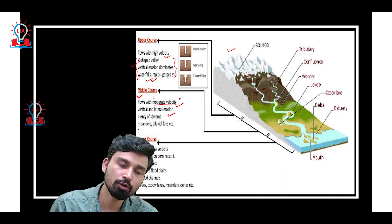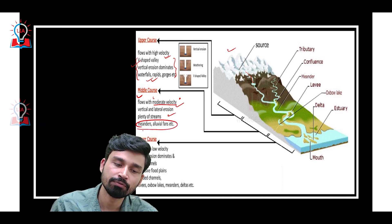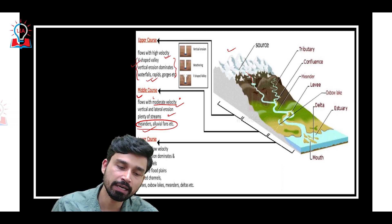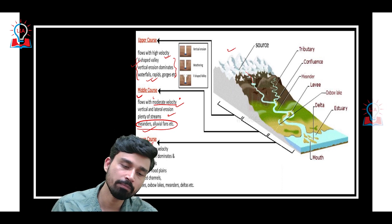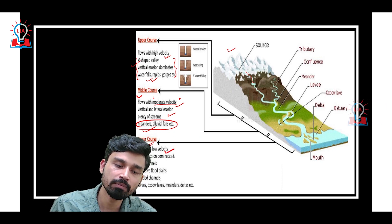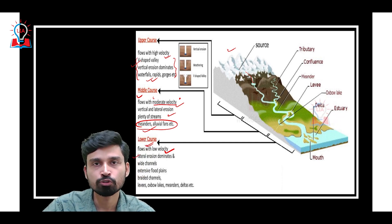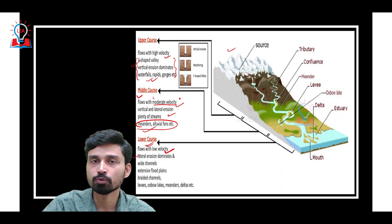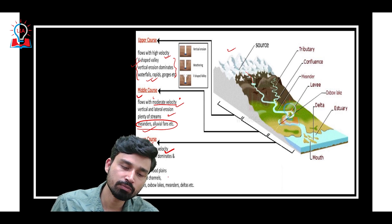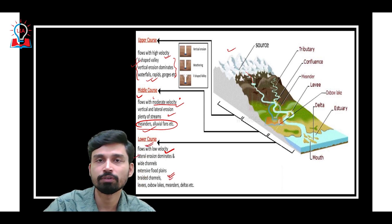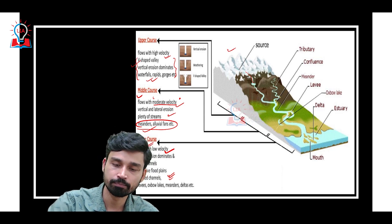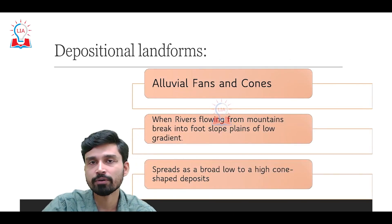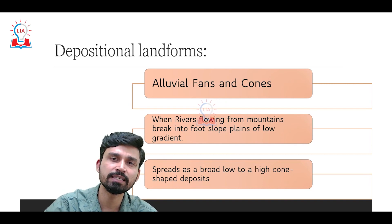In the middle course, we see a lot of depositional features along the river bank. Finally, when the river reaches near the sea, it approaches the base level and flows with minimum velocity. Here, vertical erosion is almost absent and mostly lateral erosion occurs, leading to development of several depositional features such as flood plains, braided channels, and others, which we will discuss in the coming sections. First, let us understand the depositional landforms seen in the middle course.